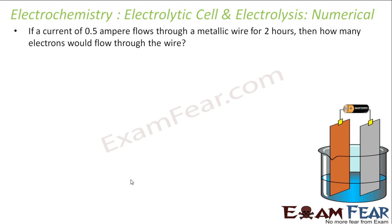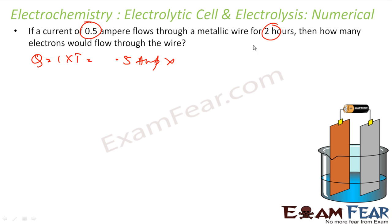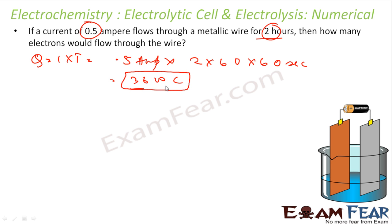If a current of 0.5 ampere flows through a metallic wire for two hours, how many electrons would flow through the wire? Current and time are given. We know Q = I × T. I is 0.5 ampere, and T in seconds is 2 hours × 60 × 60, giving us 3600 coulombs — that is the charge transferred through the wire.